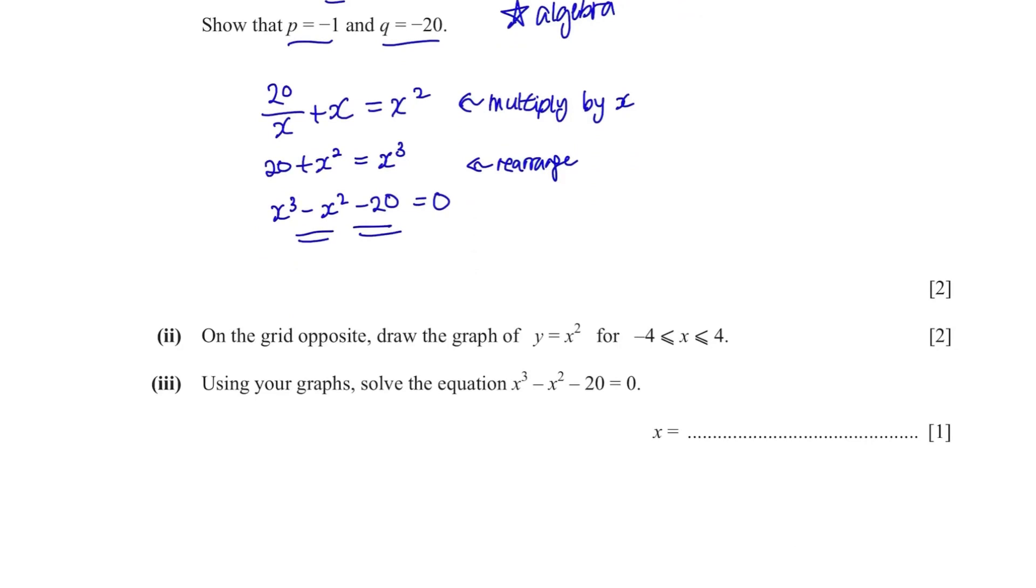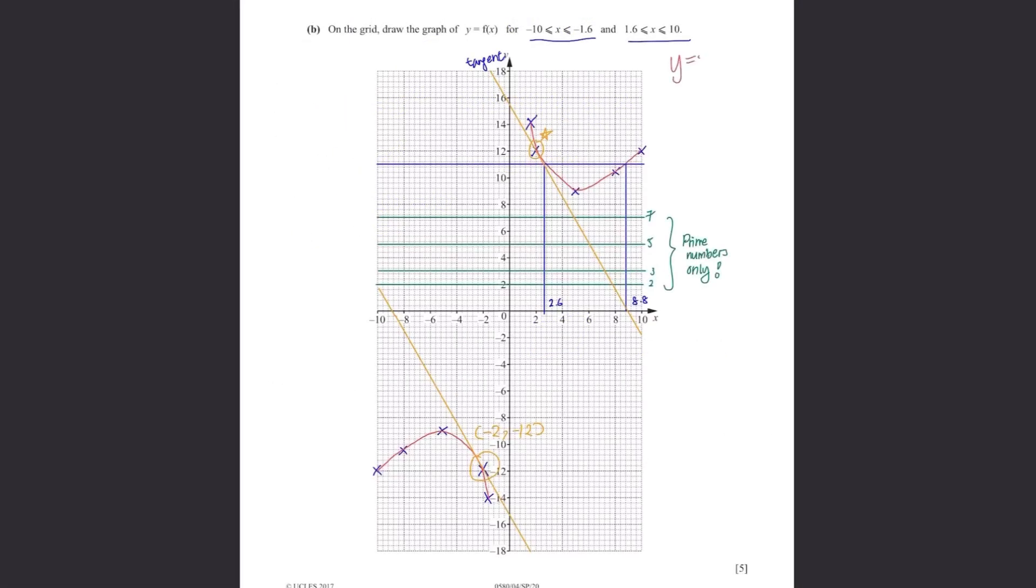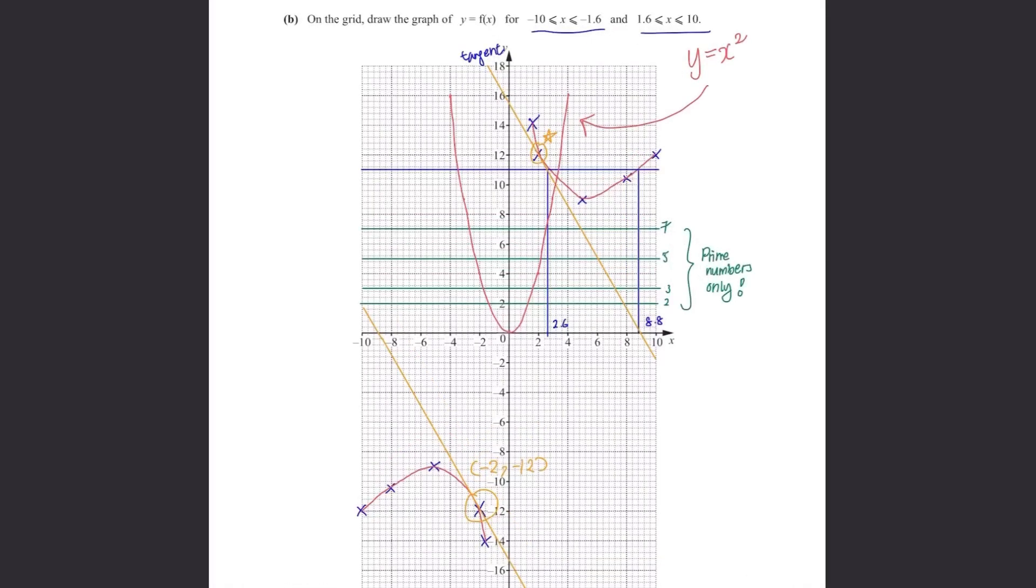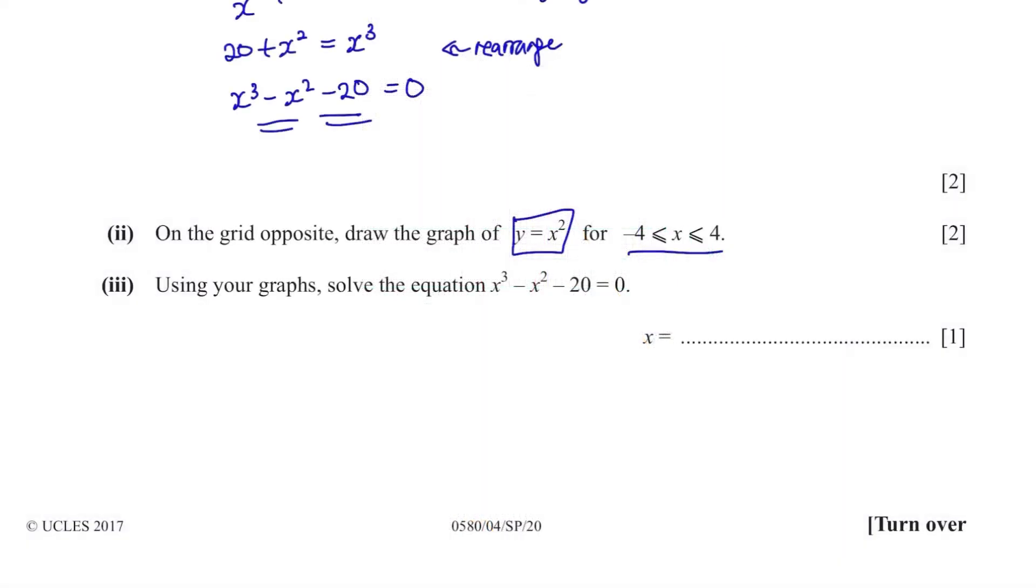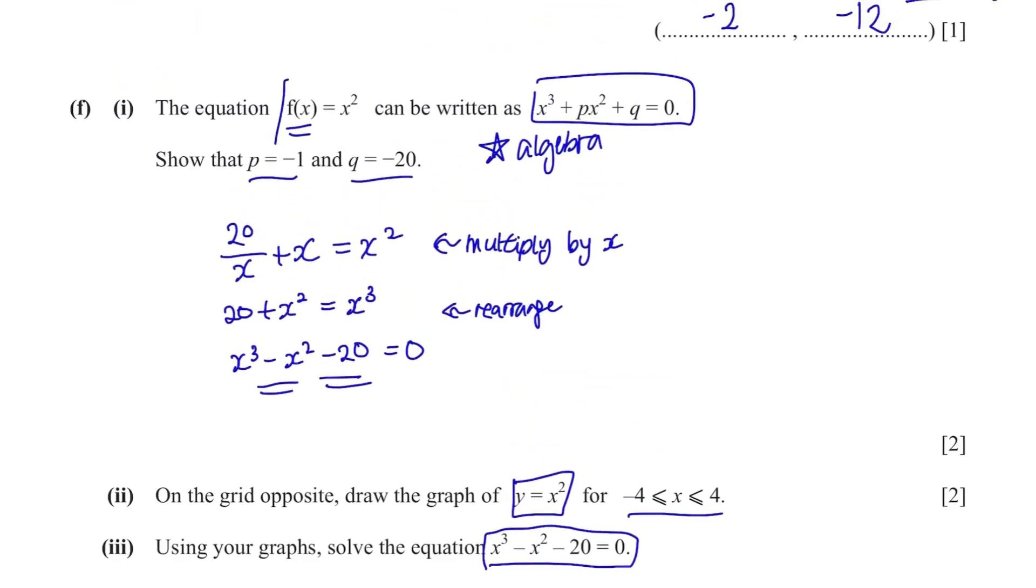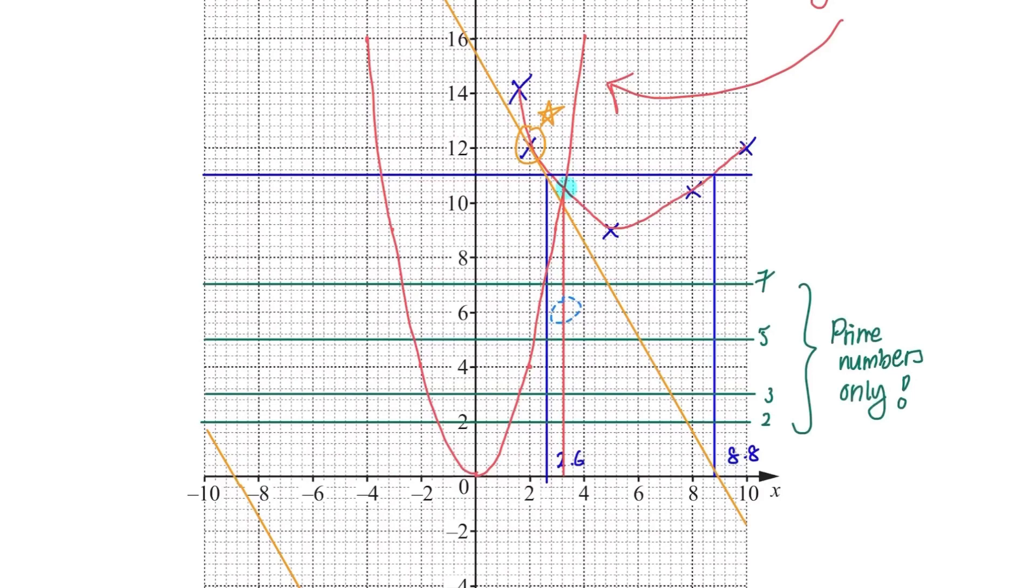On the grid opposite, draw the graph of y equals to x square for this range. Well, they said y not f(x) so you need to draw the normal y equals to x square curve which is this. This is one of the common shapes of graphs so you need to memorize this. Using your graphs, solve this equation. Alright, this equation is what we got over here. You just drew a y equals to x square curve. What do we do now? Again, we find the intersection. Read the coordinate of the point. You just need to find the x coordinate. This can be slightly different according to your graphs but it needs to be within the range of 3.1 to 3.6. If not, you need to draw your graph again.